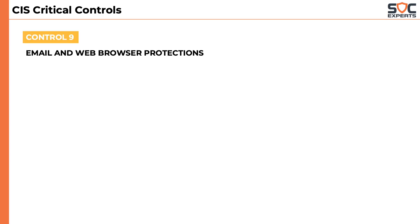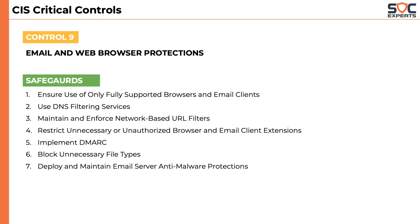The ninth control speaks about email and web browser protection. This control has seven safeguards that highlight using supported browsers and email clients, use of an internal DNS server, implementing DMARC, and having antivirus checks done at email gateway and web gateways.